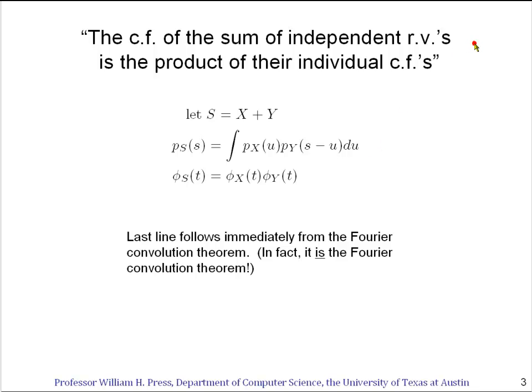Now what this theorem says is that rather than do this complicated convolution integral, which is what this is called, if we know the characteristic function of x and of y, we just have to multiply them together as simple functions of t, and that will be the characteristic function of s, again as a function of t.